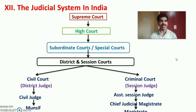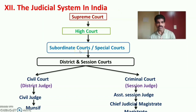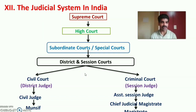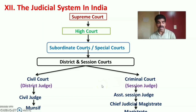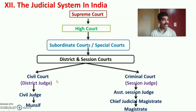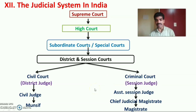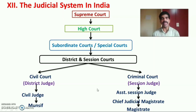Next is the judicial system in India. The highest power in the judicial system is the Supreme Court, then the High Court, then subordinate courts and special courts. At the district level, we have district courts and session courts. District and session courts are divided into civil court and criminal court according to the nature of the offence. The civil court is judged by a district judge, civil judge, and munsif. The criminal court is presided over by a session judge, assistant session judge, chief judicial magistrate, and magistrate.